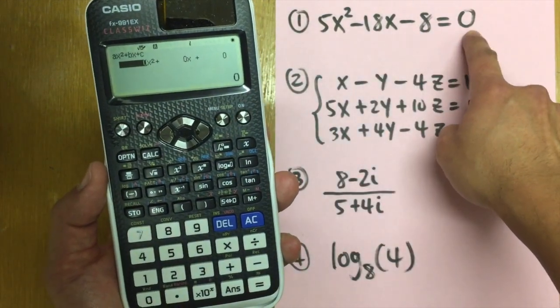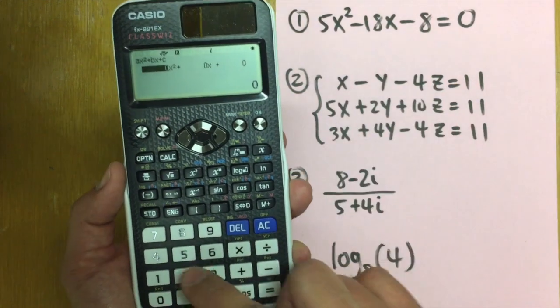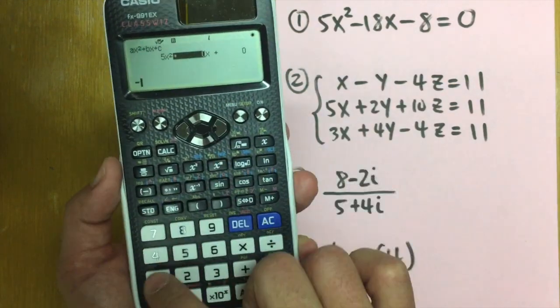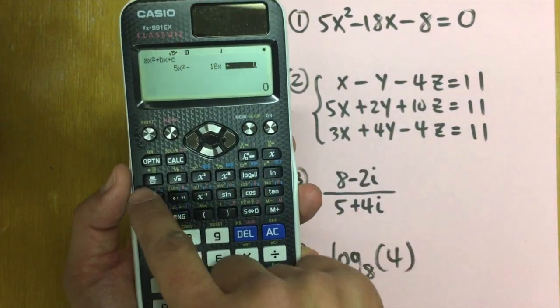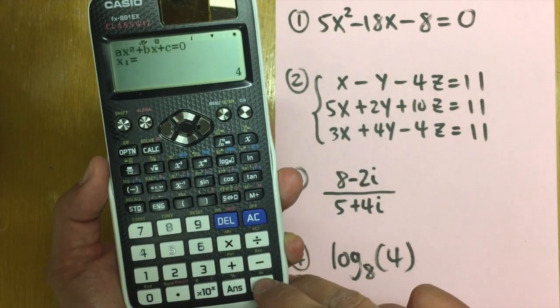Let's press two and the calculator requires you to have the equation in the standard form. The right hand side has to be zero. It is, right? So we can just enter these numbers. Five, negative 18 and then negative eight. Press equal, press equal.